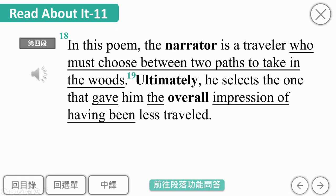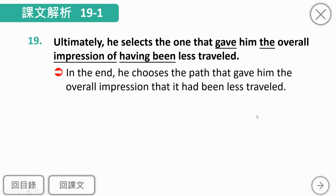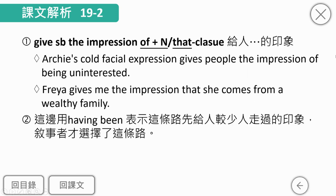'Give someone the overall impression of...'就是给人什么样的整体印象。'of'是介词，后接动名词，这里是完成式动名词'having been less traveled'，表示这条路先前给人较少人走过的印象。从诗里我们看到这条路是grassy（杂草丛生），且'wanted wear'，想要被践踏，所以才选了这一条路。